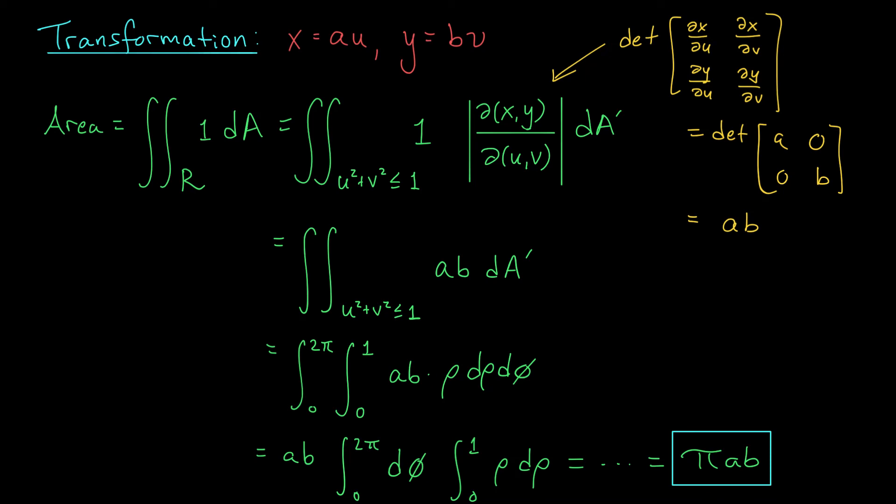As a final sanity check, see what happens when you set a and b both equal to a common constant r. In that case, your ellipse is really a circle of radius r, and so we know that its area should be pi r². Well, looks like it checks out. Pi times r times r.